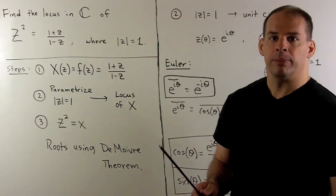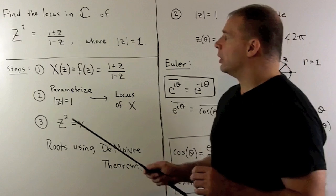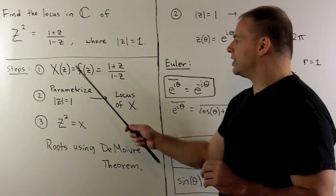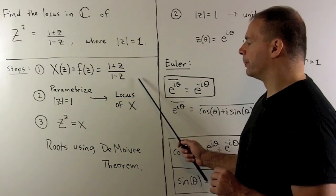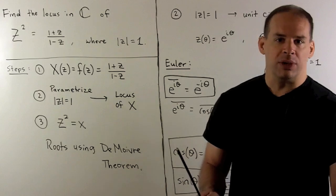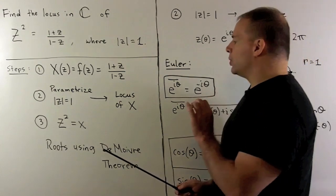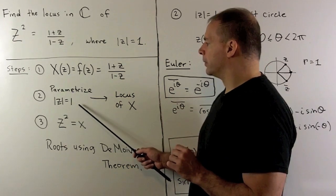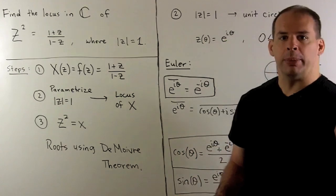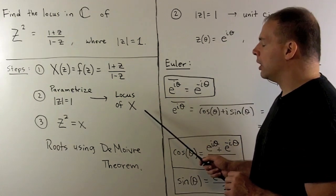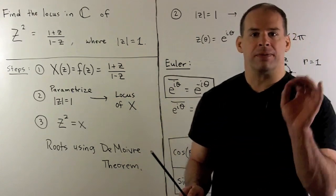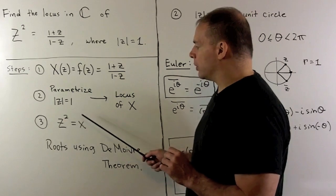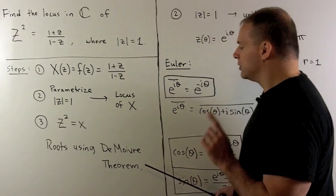The way we proceed: first, we want to solve the equation without the square. So, we're just going to look for the locus of X equal to 1 plus z over 1 minus z. I want to introduce another variable to parametrize our set of points with modulus equal to 1. Once I do that, we'll be able to find the locus of X. Once I have the locus of X, we can forget about our parameter and find all solutions of Z squared equal to X using De Moivre's theorem.